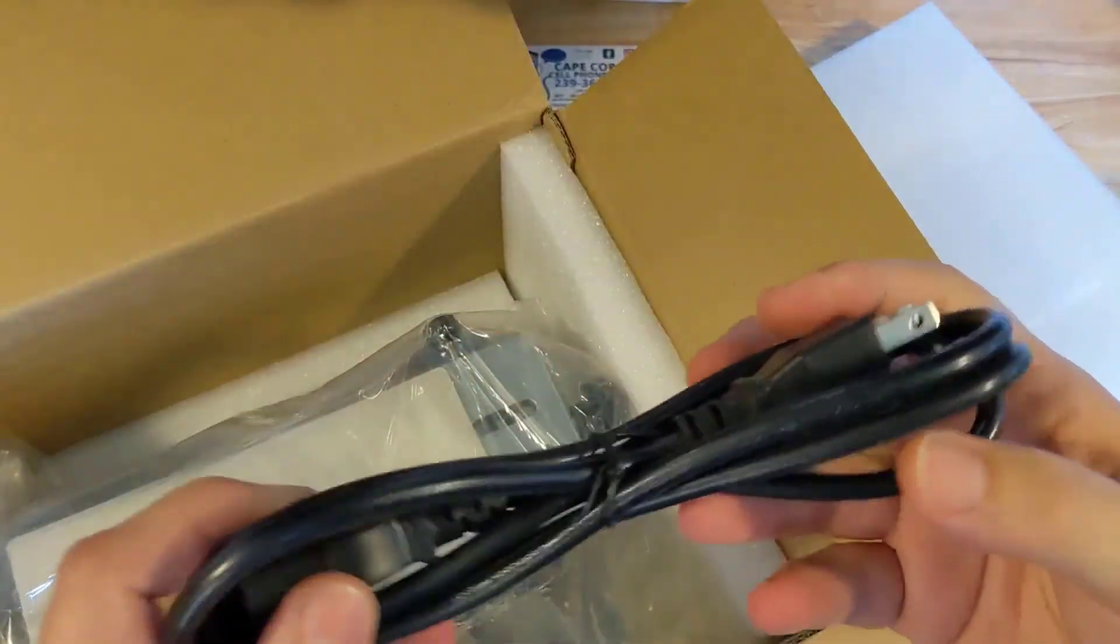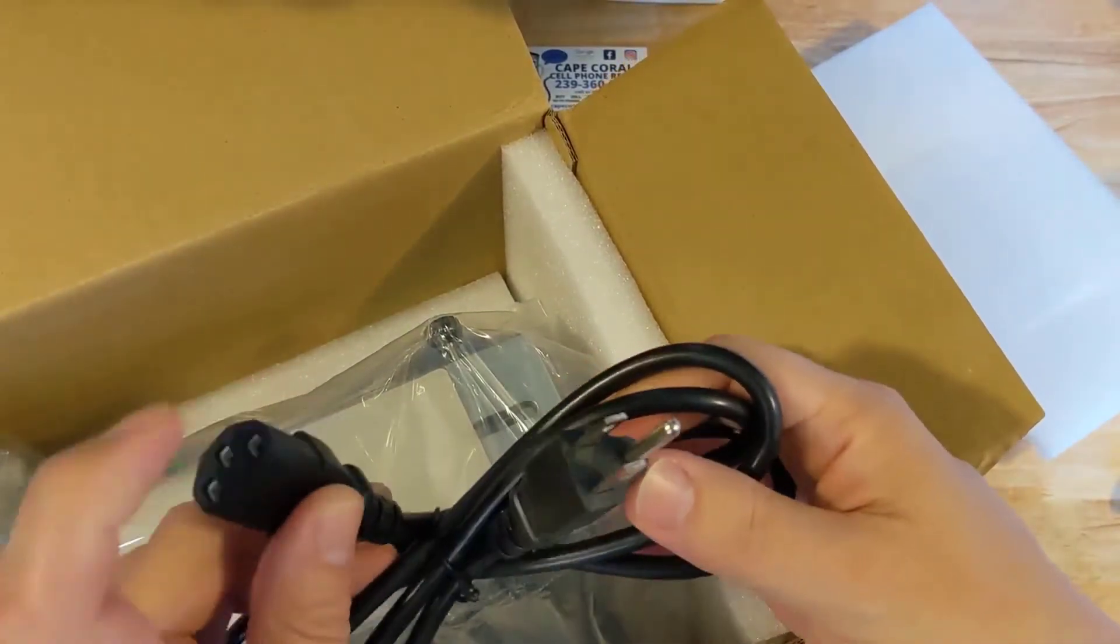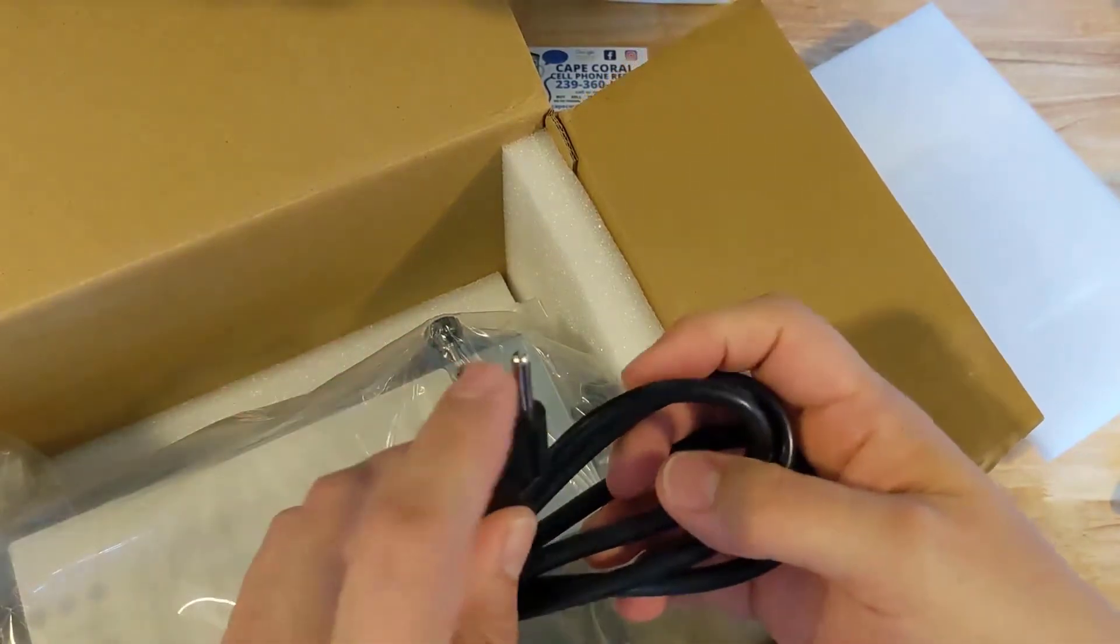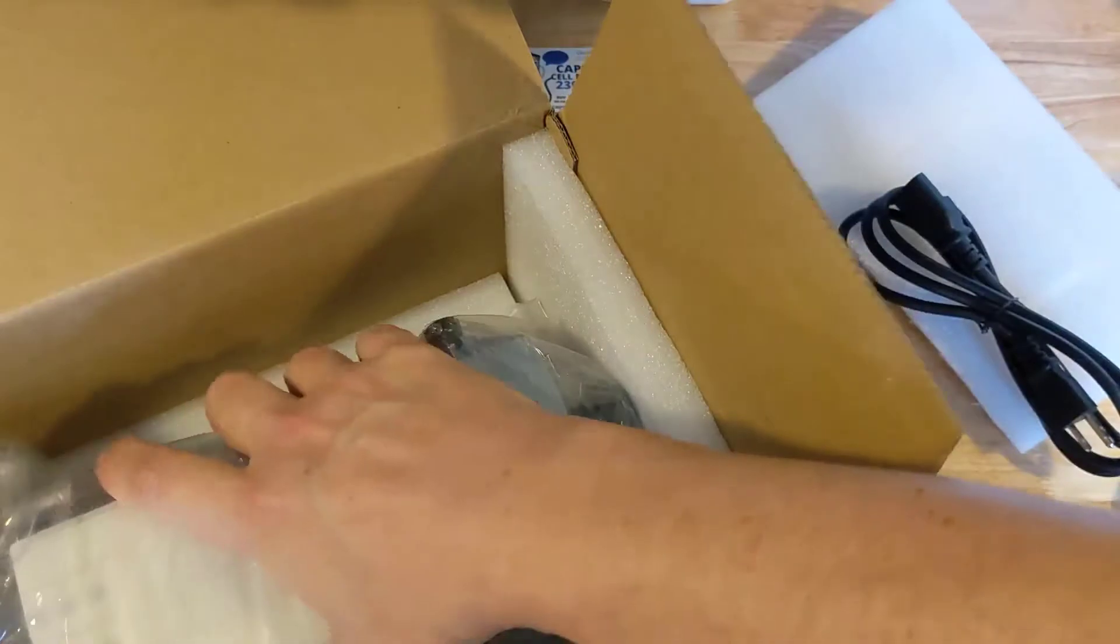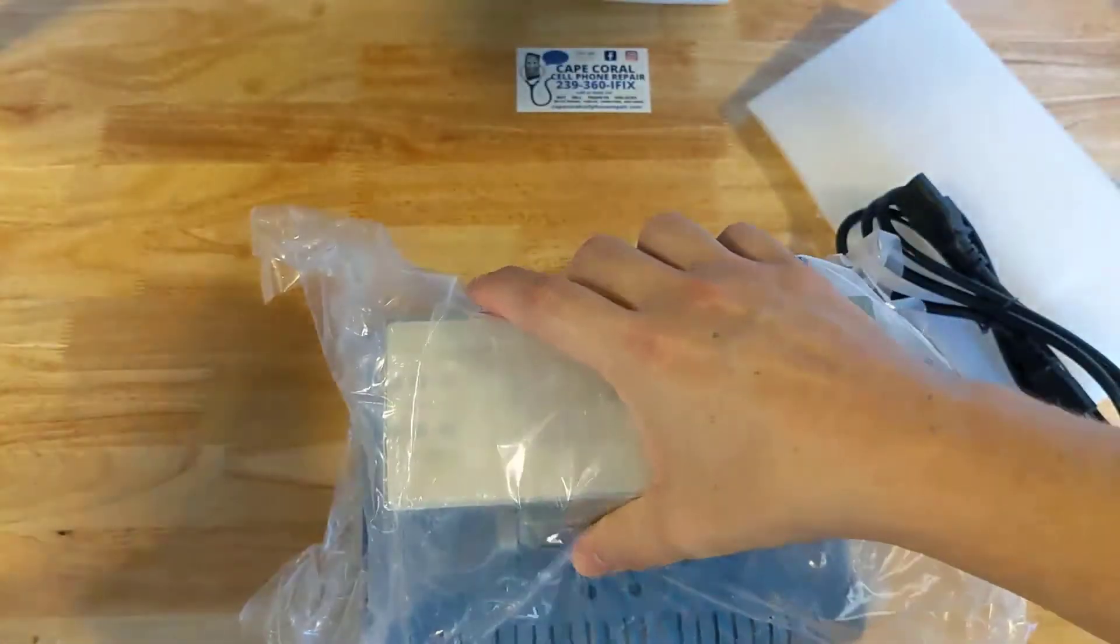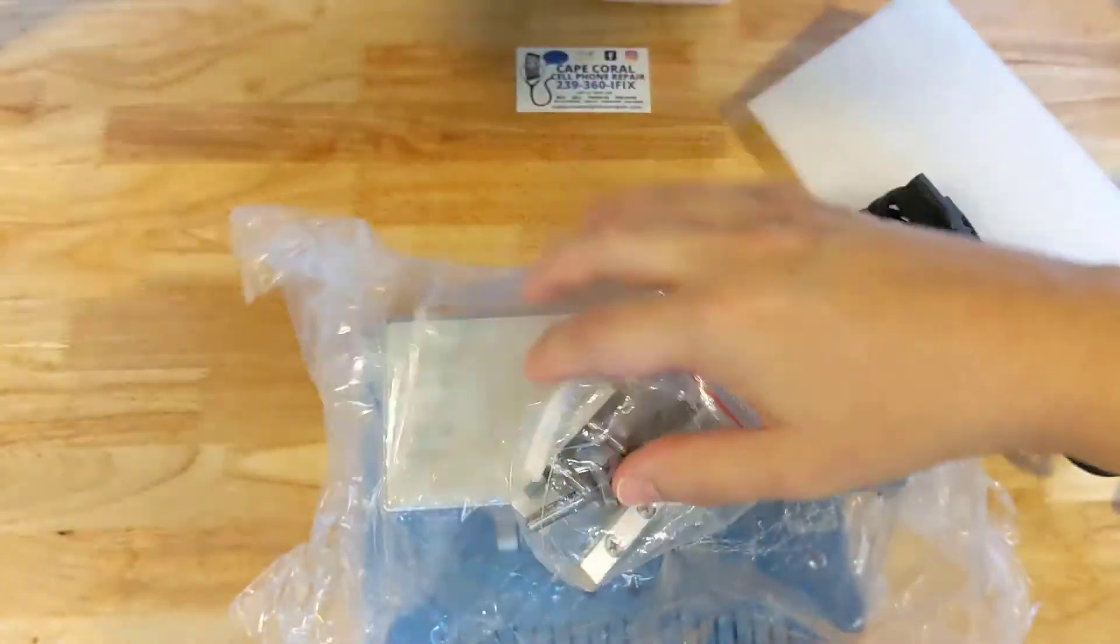So we have our cable. Connects to the machine and your current. So if you got 110, your cable should look like this, depending on what country you're in. So let's put that there and let's get the box out of the way.